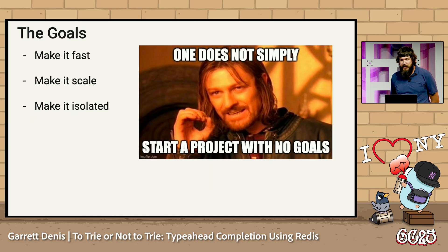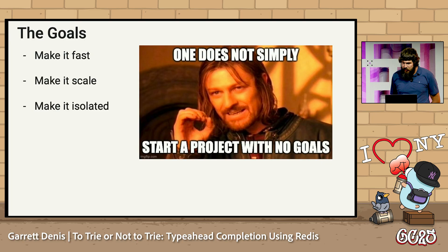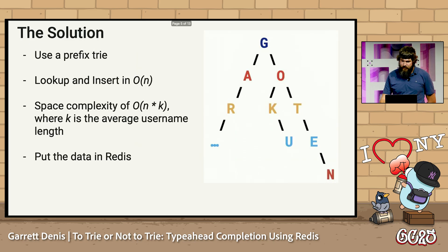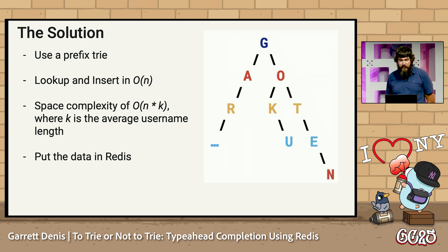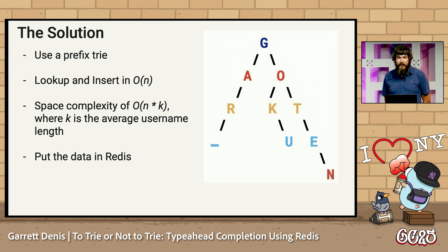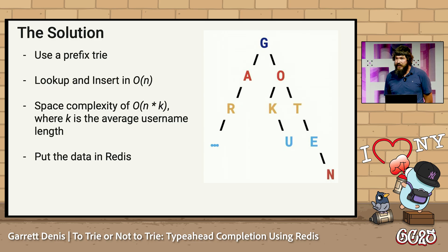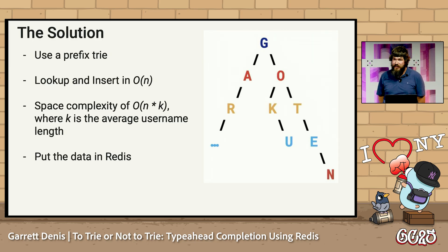What are we going to try to do here? Our goals: we're going to make it fast, we're going to make it scale, we're going to make it isolated. How are we going to actually do that? We're going to use a prefix tree. With a prefix tree, you can actually achieve insert and lookup times of O(N). In our case, the space complexity is O(N × K), where K is the average length of a username that we're scoring. One thing to keep in mind here is if you have users with similar and overlapping names, you do get some compression.